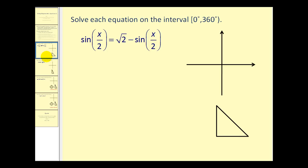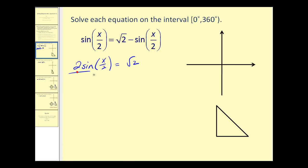We want to solve this equation on the interval from zero to 360 degrees. Notice what's different about this one is we have half angles. Let's approach this in the same way — add sine of x over two to both sides of the equation. That gives us two sine of x divided by two equals square root of two. Dividing both sides by two, we get sine of x divided by two equals square root two over two.